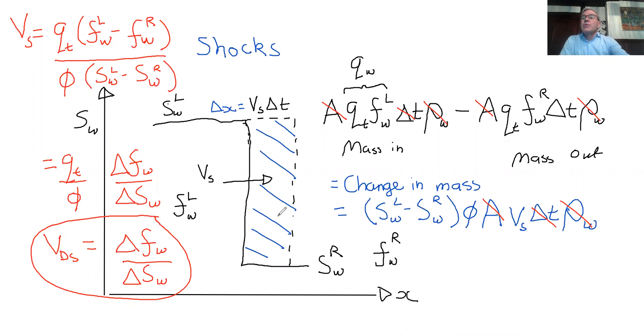If on the other hand, in fact, there was no discontinuity, this was a small change, and therefore I could take the limit that these deltas go to zero, then we would simply have a speed that's dF_W/dS_W, which is what we derived before.